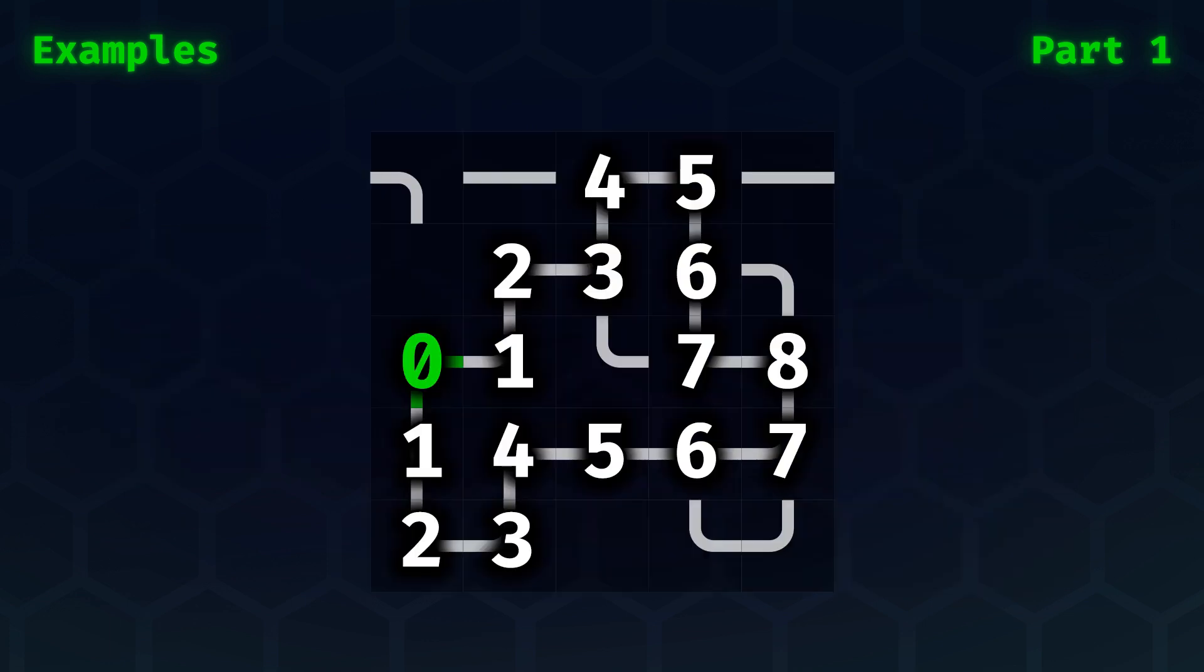The question then becomes, if I start on the green position in the loop, what is the furthest that I can travel away from the starting position? In this example, the answer would be eight segments.